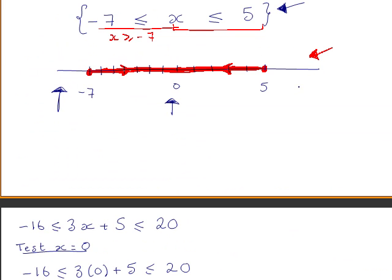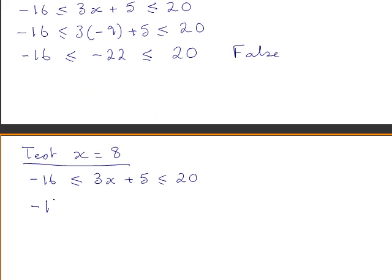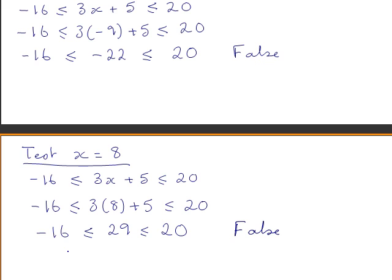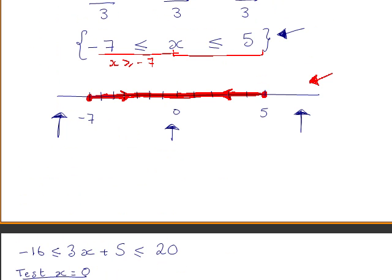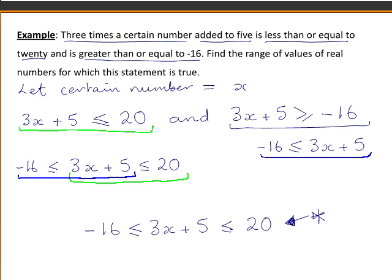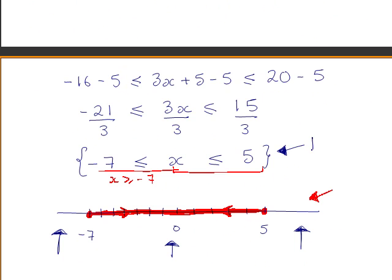We will also test a value greater than 5, so we try x equals 8. This gives minus 16 less than or equal to 29, but 29 is not less than or equal to 20, so this is false and not part of our solution. This proves we are correct: only values between minus 7 and 5, including minus 7 and 5, satisfy the original inequality. The range of values of real numbers for which the statement is true is minus 7 less than or equal to x less than or equal to 5.